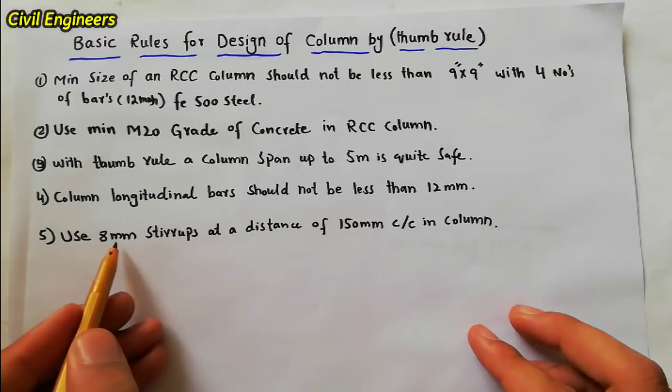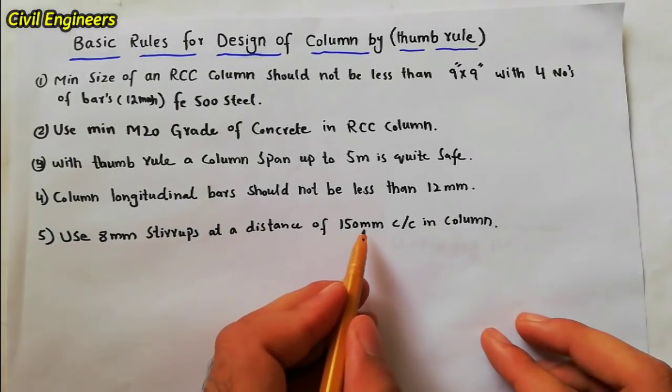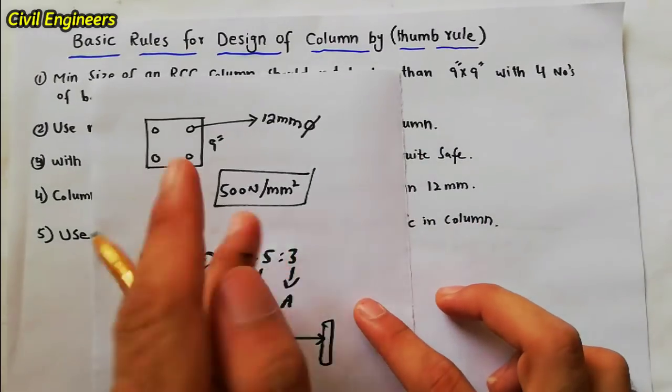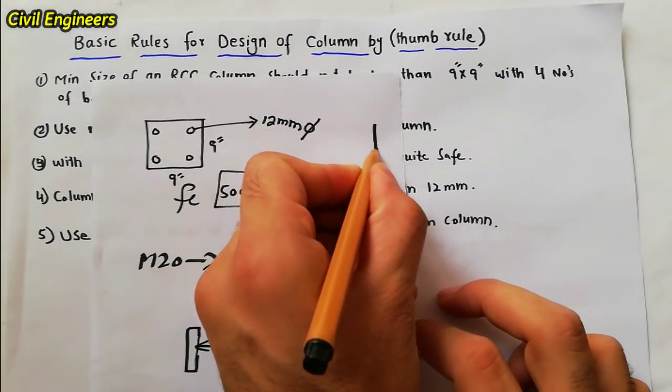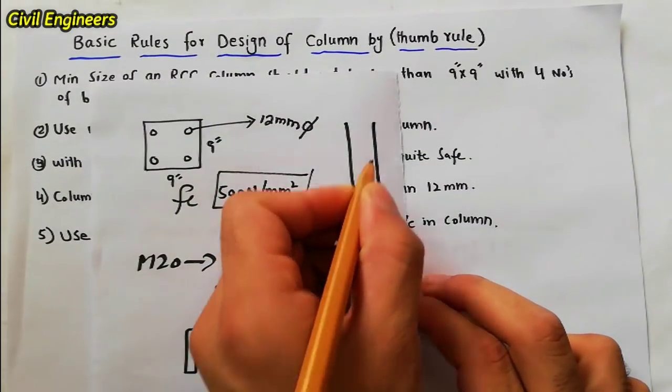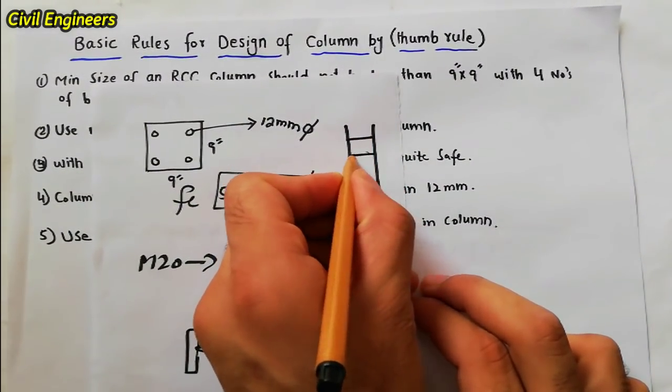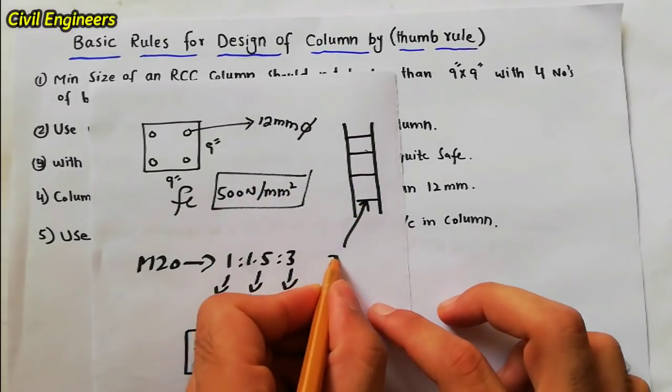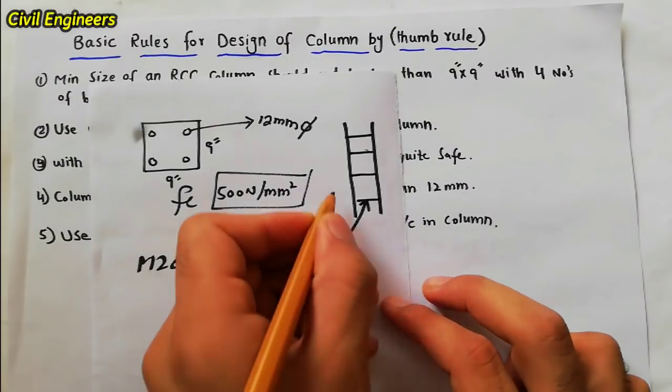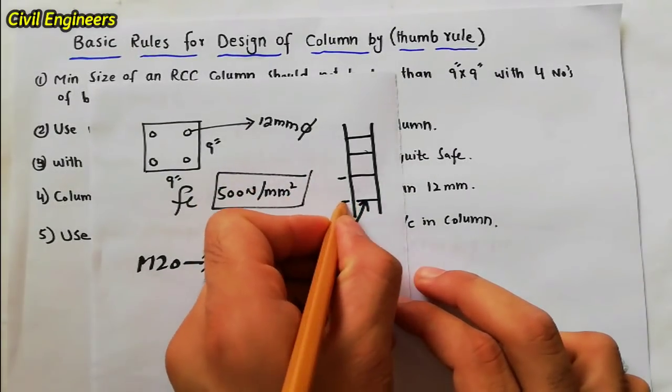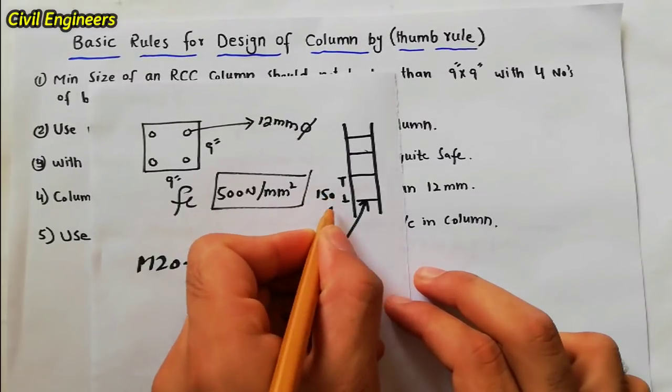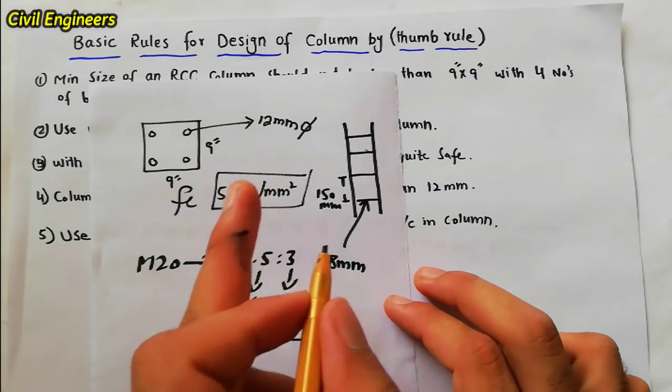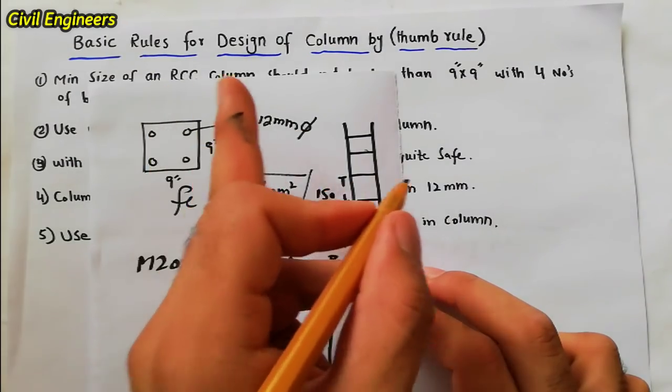And the last one is use 8mm stirrups at the distance of 150mm center to center in column. Suppose this is the column. These are the steel and these are the stirrups. So use the stirrups diameter 8mm at the distance of 150mm.